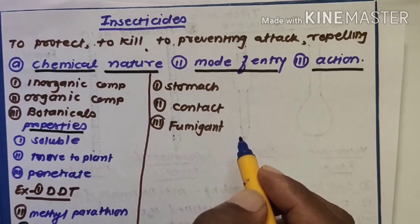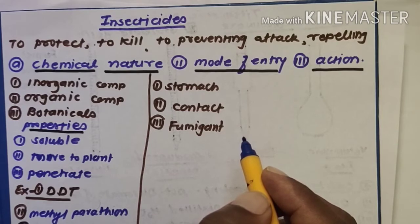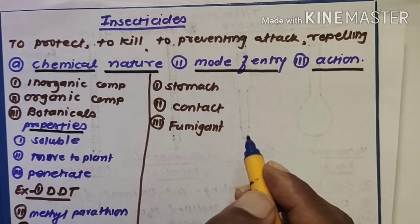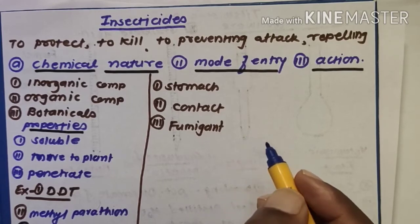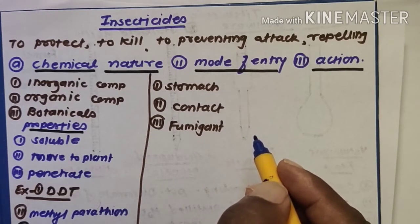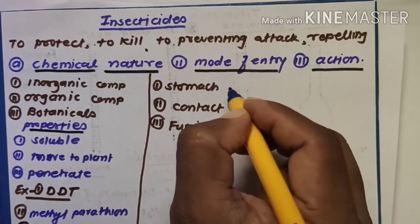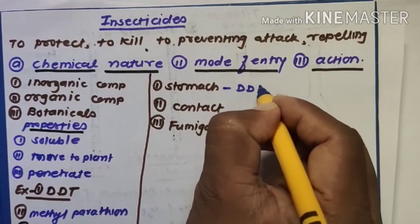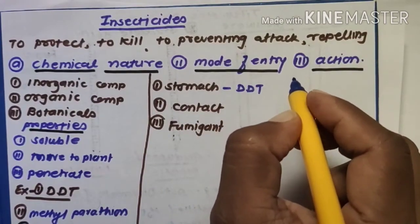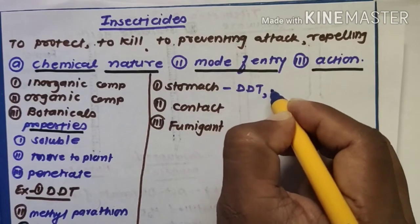Stomach insecticides are those which are eaten by the insect. These insecticides are active against chewing insects such as caterpillars and grasshoppers. Their application is through food, and entry is through the midgut of the insect. The best examples of stomach insecticides are DDT and HCH.